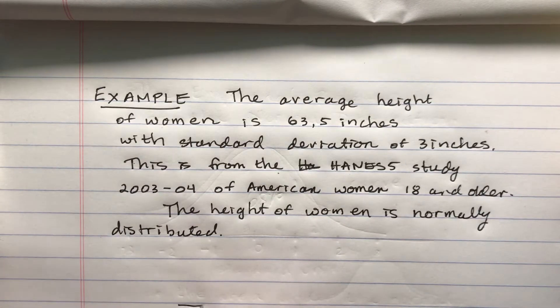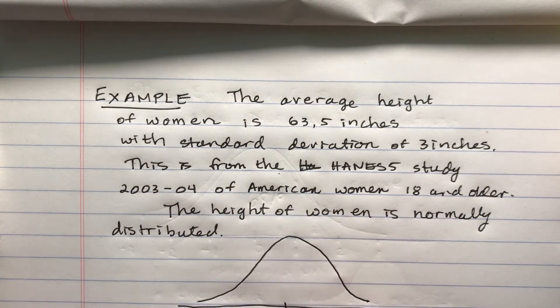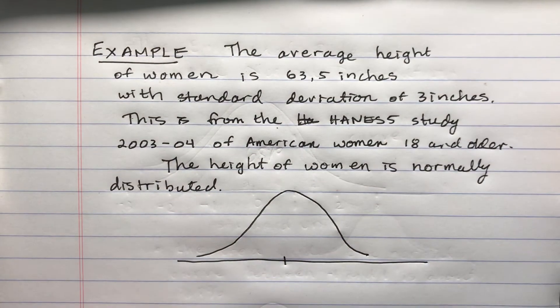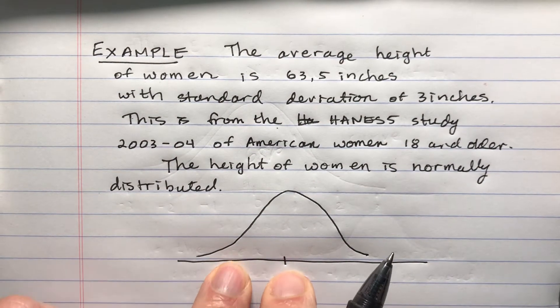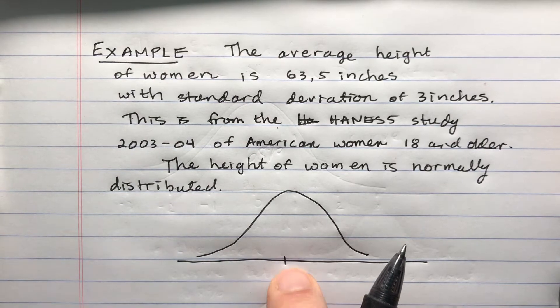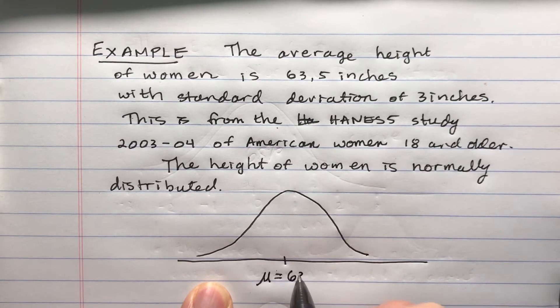What this means is when I make a bell curve here, or this normal distribution, I don't put zero in the middle. That's the standard normal distribution. Instead, I'm going to put these numbers in here for the mean, which is 63.5.